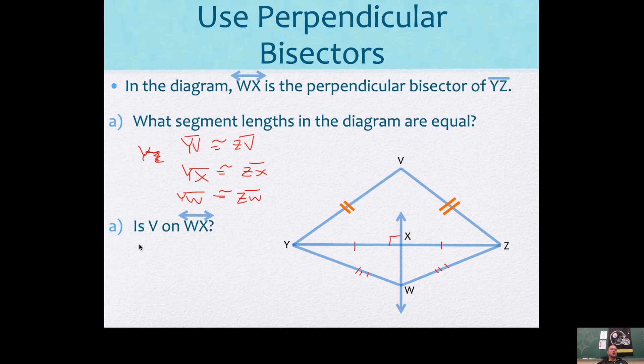Here's a question for you. Is point V on the perpendicular bisector, line WX? Well, we can't really tell if this goes through V or not. But the converse theorem tells you if these distances are the same, if V is equidistant from Y and Z, then this line is going to go right through that point. So the answer is yes, because those are the same. So I'll put that there. Segment YV is congruent to segment ZV.